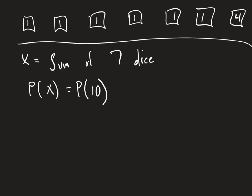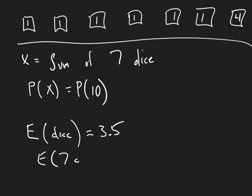The problem is asking us to find two sums of our seven dice that have equal probabilities. A super important thing to notice — not exactly intuitive, but once we see it the problem becomes a lot easier — is to first find the expected value of the sum of the die rolls. We know the expected value of a single die equals 3.5, so the expected sum of seven dice equals seven times 3.5, which is 24.5.